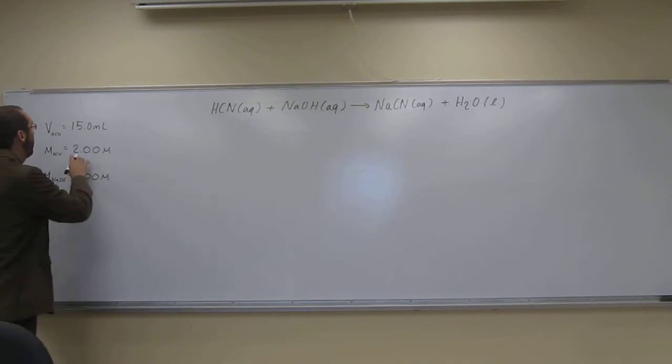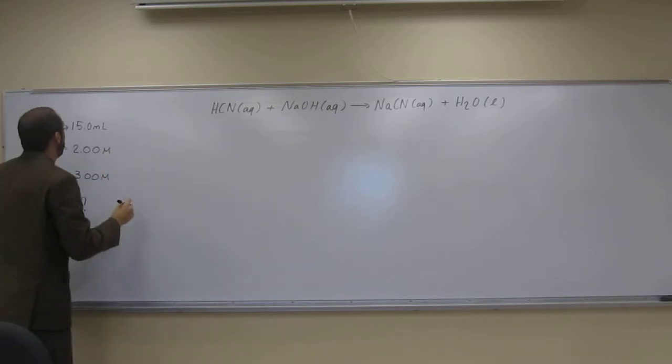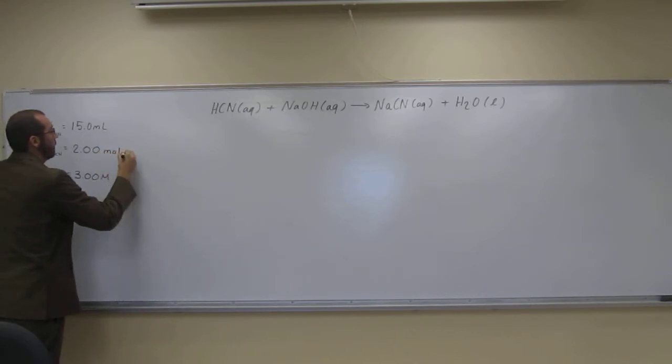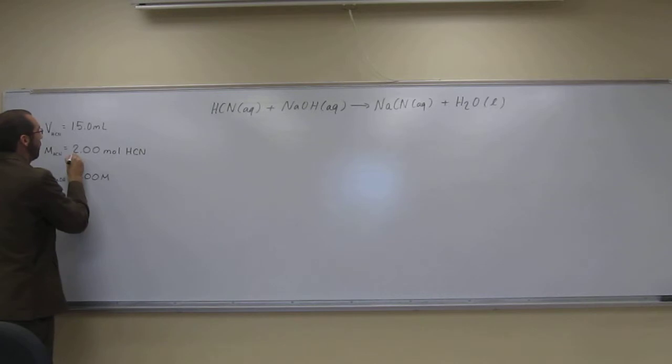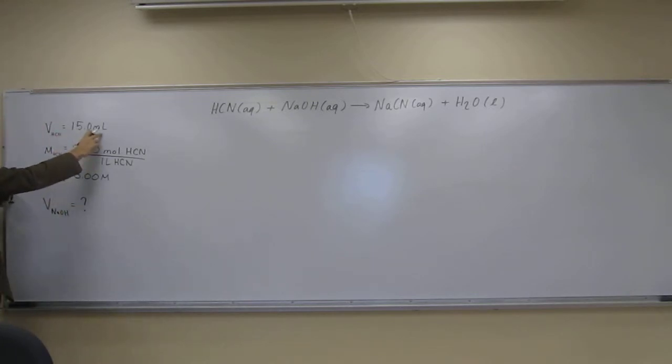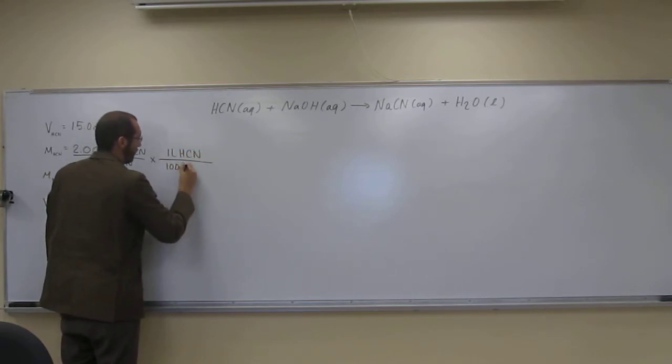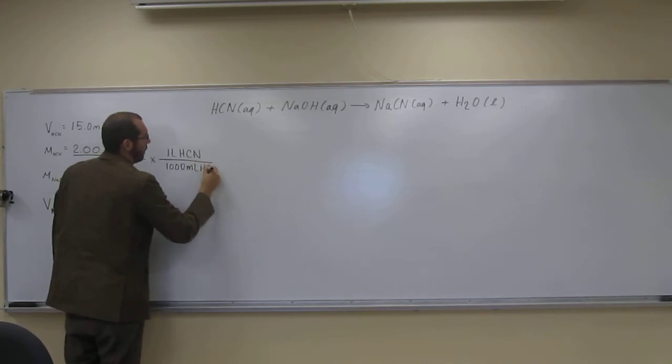So how do we do that? Remember, this is moles per liter. So let's just convert that. Moles of HCN per one liter of HCN, and we've got 15 milliliters of HCN. So for every one liter of HCN, 1,000 milliliters of HCN.